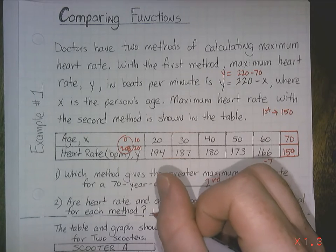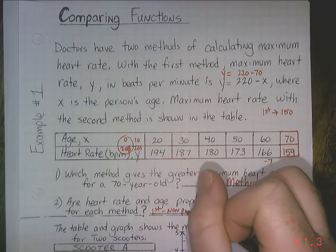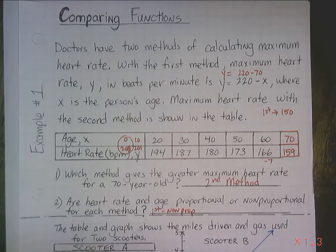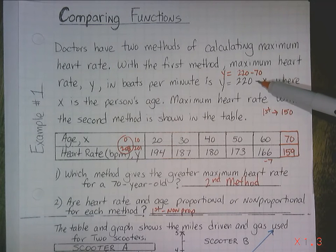And because it doesn't start at 0,0, the first method is non-proportional. So the first method is non-proportional. If you look here, at this one, same thing.